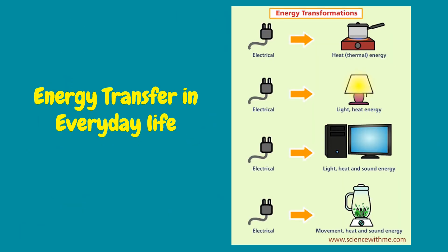At home, most appliances are powered by electrical energy. For example, a water heater receives electrical energy and converts it into heat. A television also receives electrical energy, which is then converted to light, sound, and heat energy.